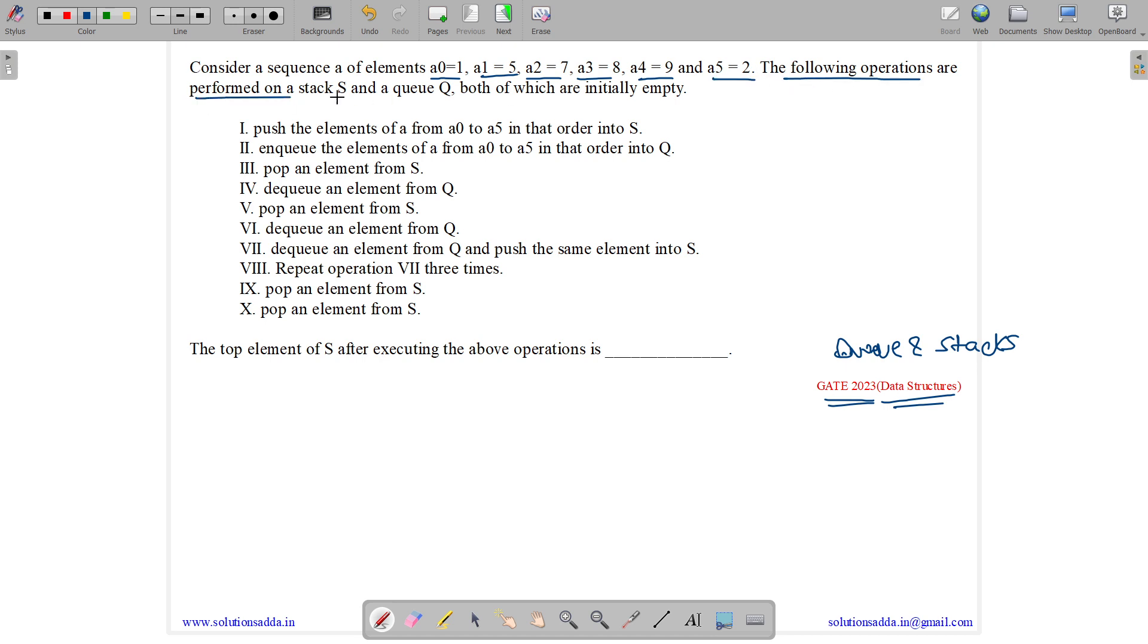The following operations are performed on a stack S and a queue Q. So we have a stack S and we have a Q denoted by Q, both of which are initially empty. So here we have the operations.